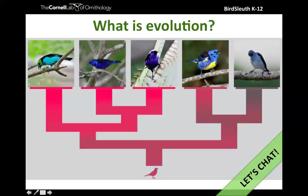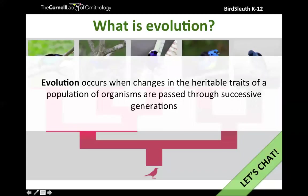We can say that evolution is defined as an ongoing process in which species change over time. More specifically, evolution occurs when changes in the heritable traits of a population of organisms are passed through successive generations. Tonight we're going to be discussing natural selection and also sexual selection, which is a specific form of natural selection. These changes happen over time — they're kind of accidental, happy accidents that change a population over time.